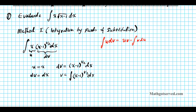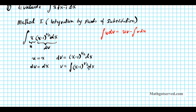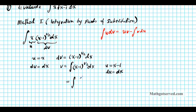To integrate x minus 1 to the 1/2, we can use u-substitution. The inner function of this composite function, when differentiated, gives 1 dx — a telltale sign for substitution. So we call u equal to x minus 1, and differentiating both sides gives du equals dx. We substitute to get the integral of u to the 1/2 du, which is a perfect substitution requiring no constant adjustment.